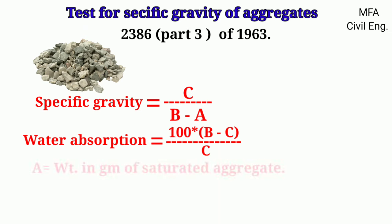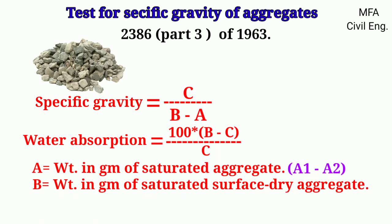Where A is the weight in grams of the saturated aggregate in water, that is A1 minus A2. B is the weight in grams of the saturated surface dry aggregate in air, and C is the weight in grams of the oven dry aggregate.